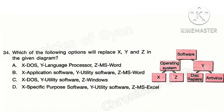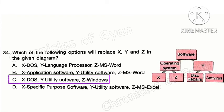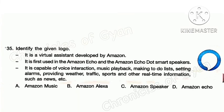Question 34. Which of the following options will replace X, Y, and Z in the given diagram? Looking at the diagram, operating systems are X and Z. In the available options, X is DOS (an operating system) and Z is Windows (also an operating system). Y is an antivirus, and in option C you can find utility software. So the correct option is option C.